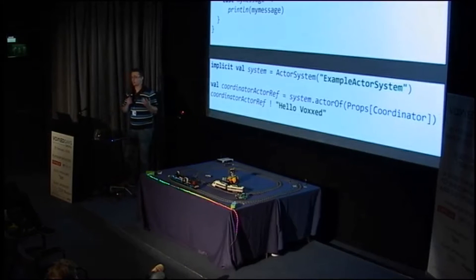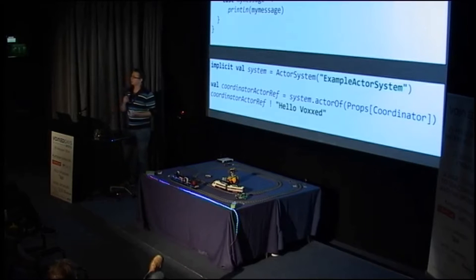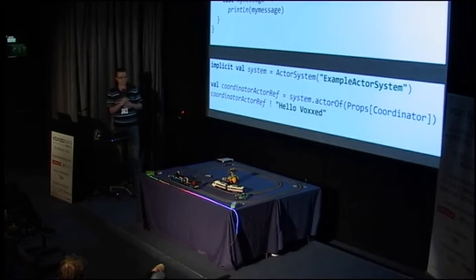In this example, the actor can receive only one type of message and when it gets it, it prints it — the most simple actor I could think of. To send it a message from a different part, you need an actor system. You create the actor system, then create a reference to the actor, and then the last part sends the actor a message. This example shows a local actor, meaning multiple actors in the same JVM sending messages across, but we wanted to use remote actors.